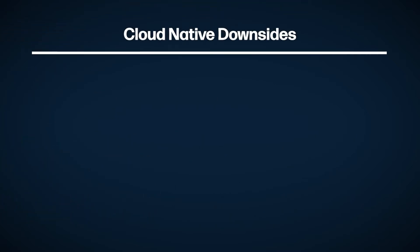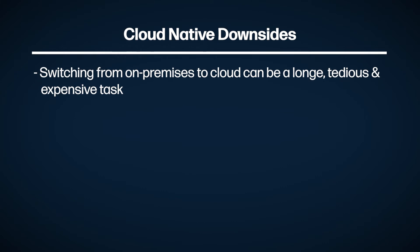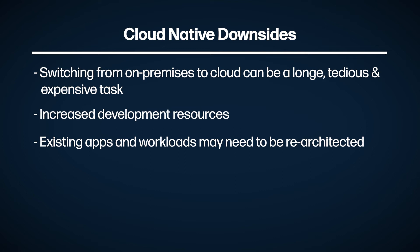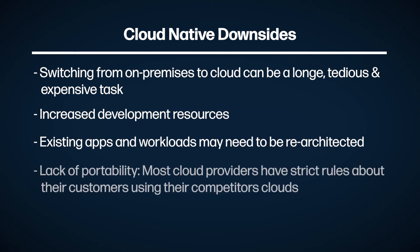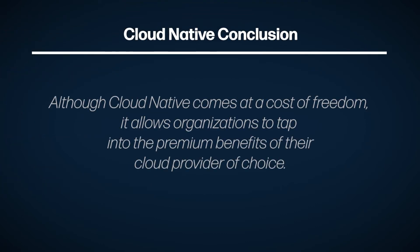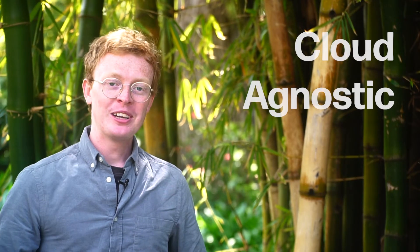Now let's take a look at a couple of drawbacks of cloud native. Taking the leap and switching over to cloud nativity can be a long and complex process if you're originally on-premise. There's a high chance your development team overhead will increase, your existing apps could have to be re-architected, and it comes with a lack of portability — meaning if you want to move a few infrastructure parts over to AWS or Google Cloud Platform, you may run into issues. In conclusion, cloud native, although at the cost of freedom, allows organizations to tap into the premium benefits, speed, and agility that sticking with a native cloud partner can offer.